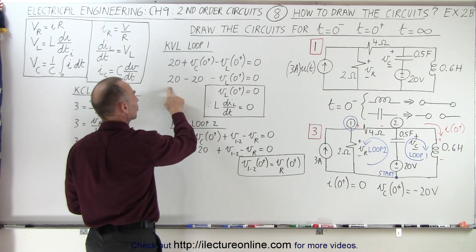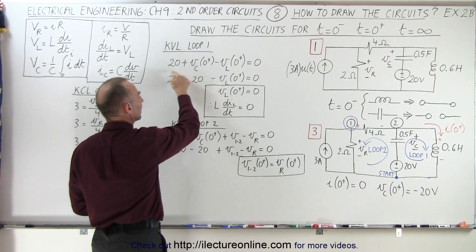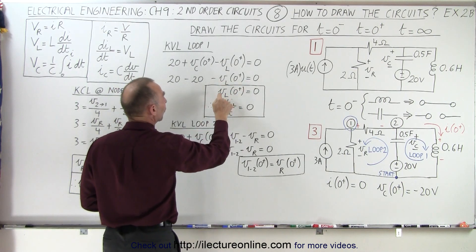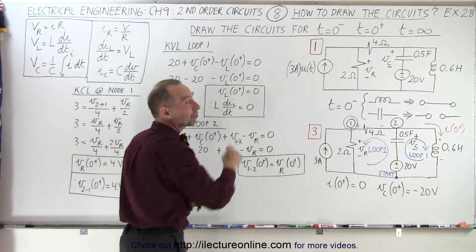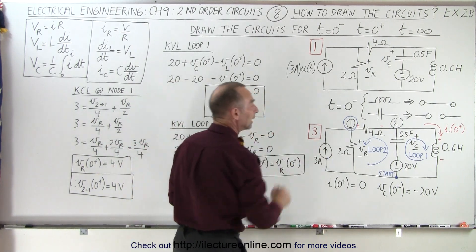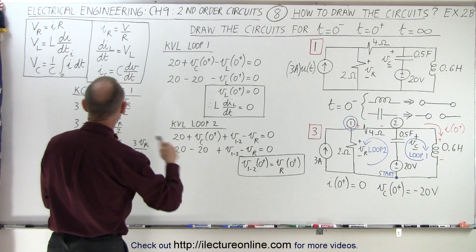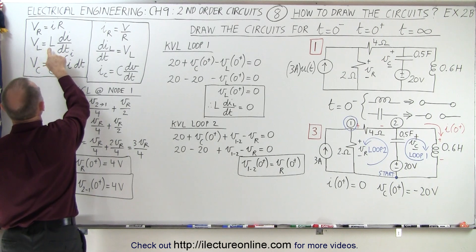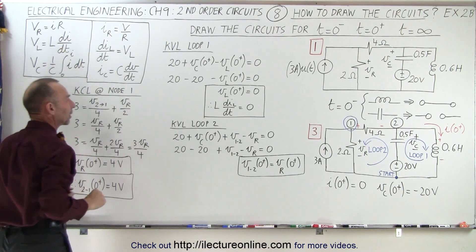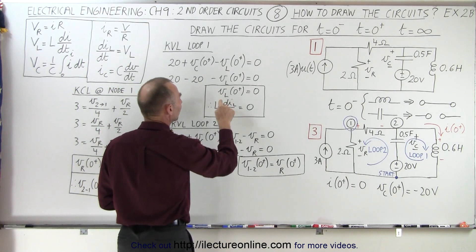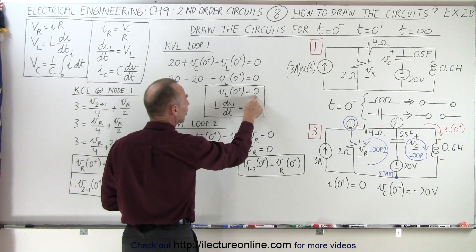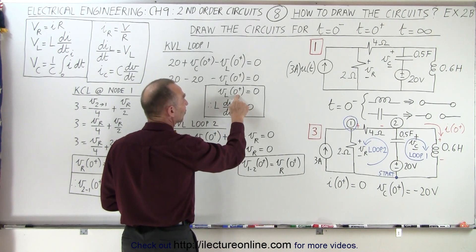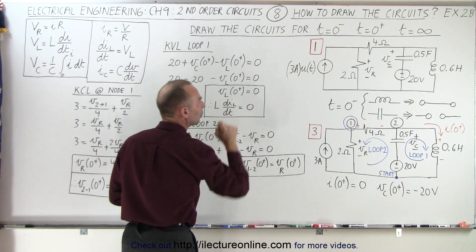We have a 20-volt rise across the source and a 20-volt drop across the capacitor — they cancel each other out, so minus the voltage across the inductor equals zero. Therefore the voltage across the inductor equals zero right after the event happens. Using the inductor equation V = L·(di/dt), since the voltage across the inductor equals zero, the change in current through the inductor with respect to time at that moment is also zero.